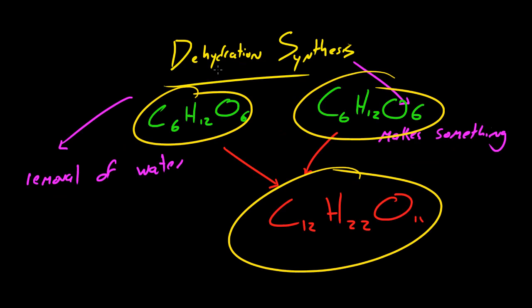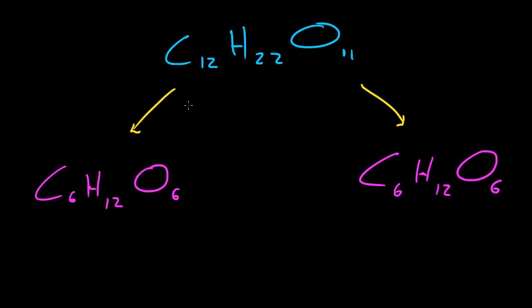Now, dehydration synthesis is basically the process of when monosaccharides, like glucose and fructose, they join together, and whenever the molecules bond, they lose a water molecule. So that's why it's called dehydration, which means removal of water, synthesis, which means making something. So dehydration synthesis, whenever you make something and take away water in the process. And the opposite of that is called hydrolysis.